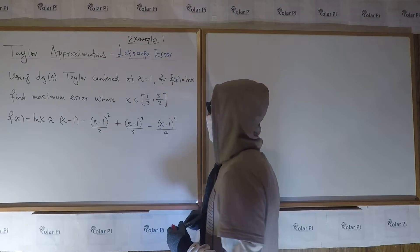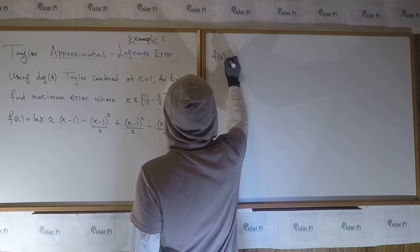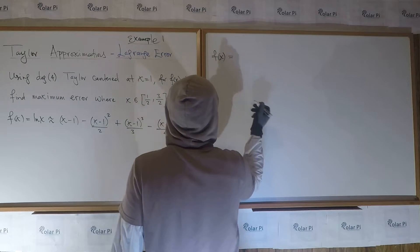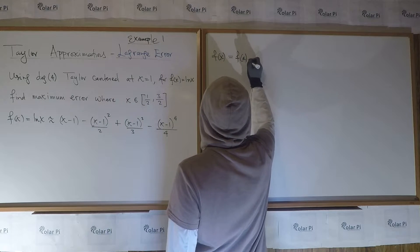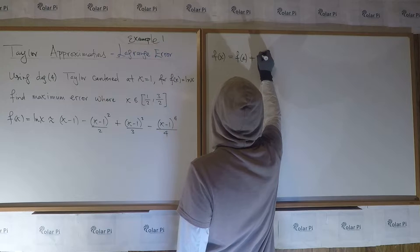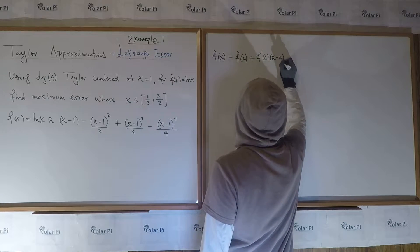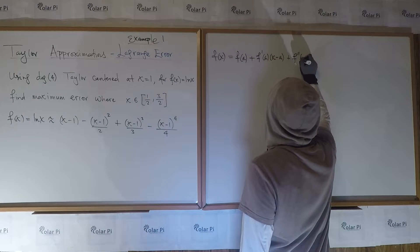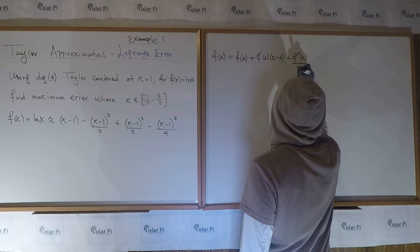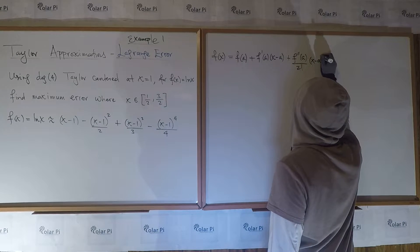Now, to start, let's recall that the Taylor polynomial expansion for any function f of x would look like this. So if the center is a, then it'd start with f of a plus f prime of a times x minus a, and then plus f double prime of a over two factorial times x minus a to the second.